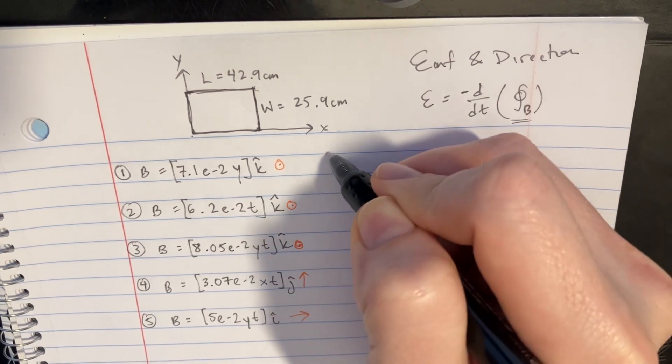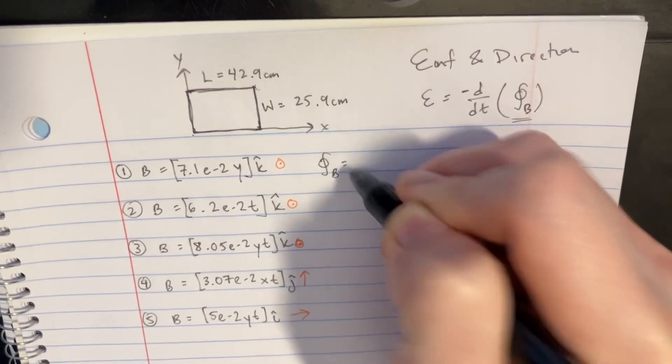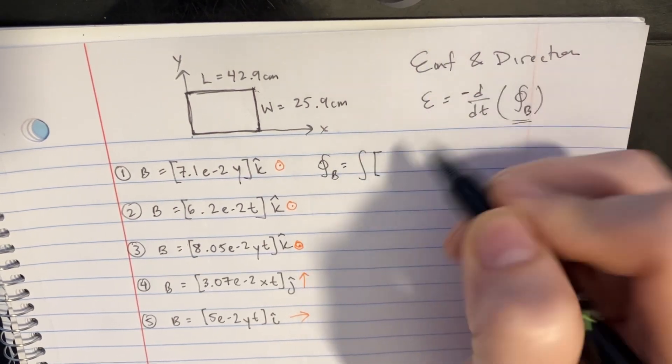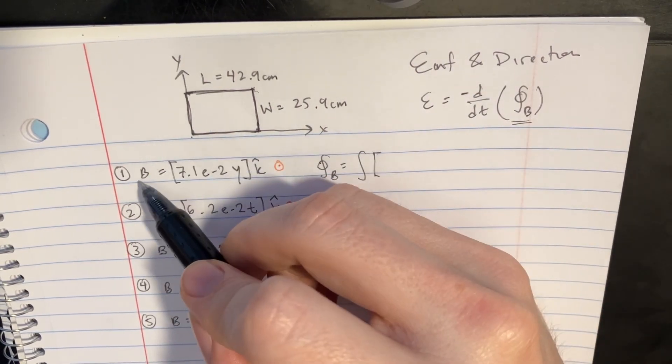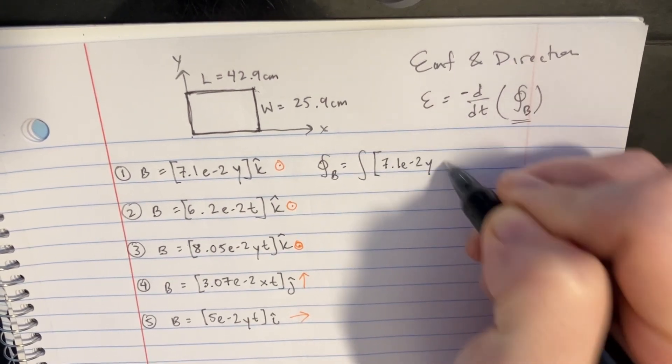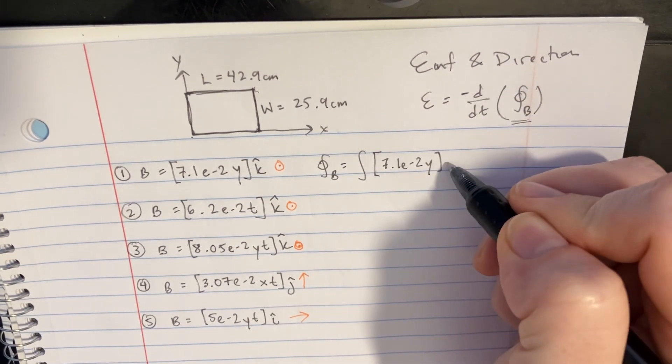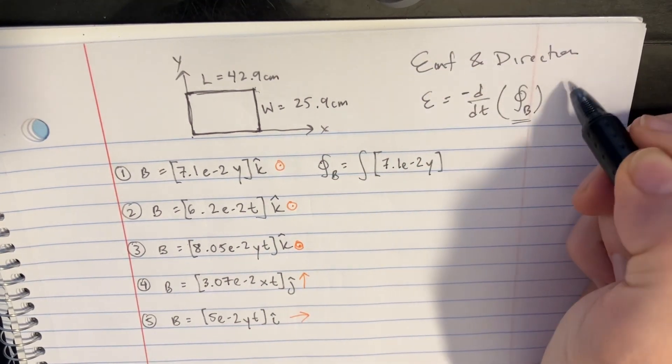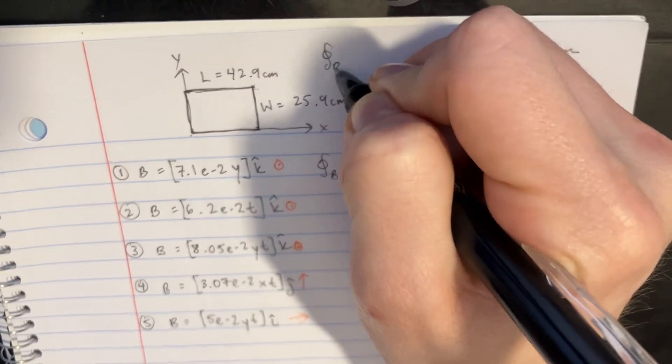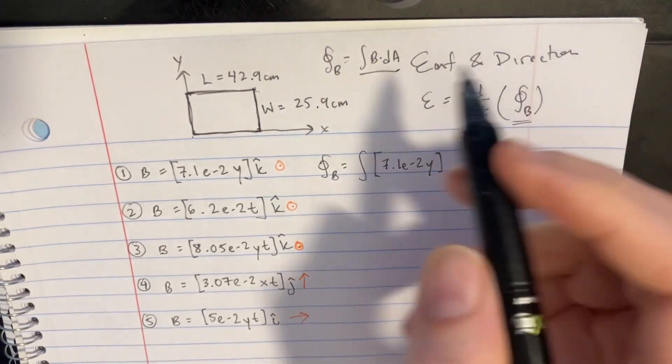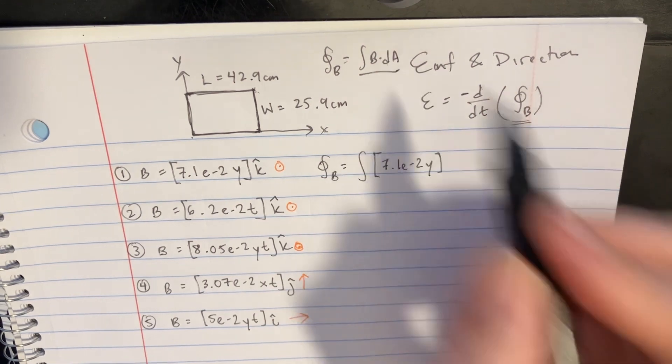Let's start with the first one here. It's just going to be the integral of the B, which is this, 7.1e to negative 2y. I'll put the original equation here, so it would be integral of B dot dA. Let's just keep that in mind, so we're dotting it with the dA. Now dA, in this case, is just going to be dx dy. So we're going to use that for what we put in here, dx dy.